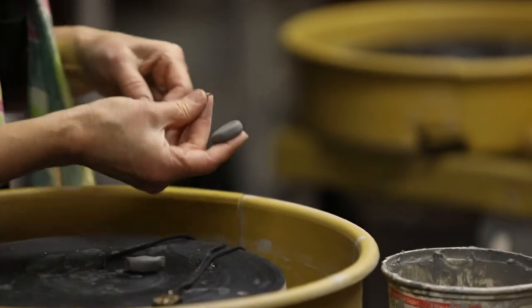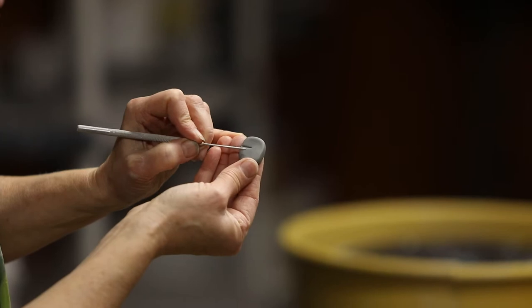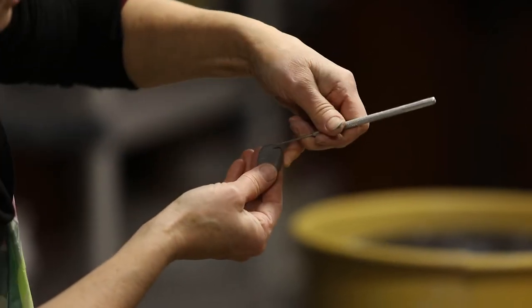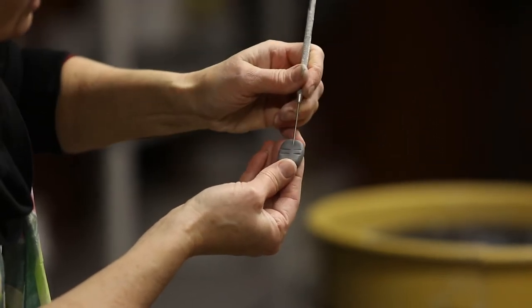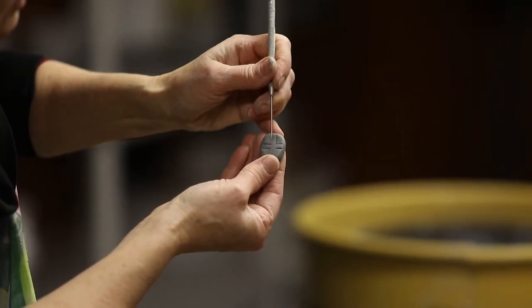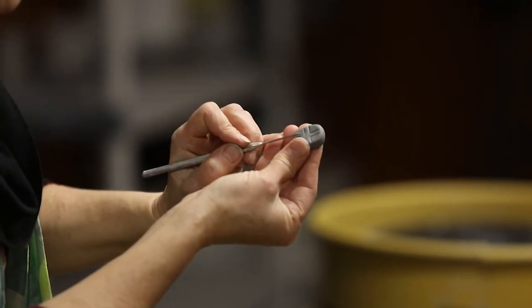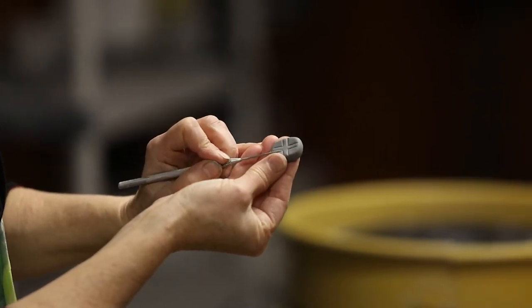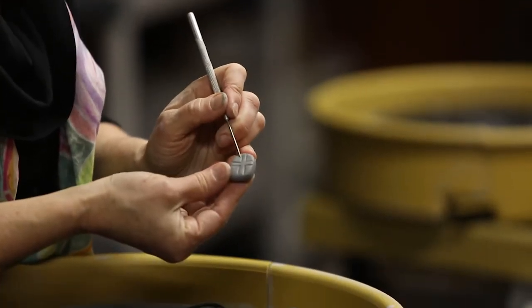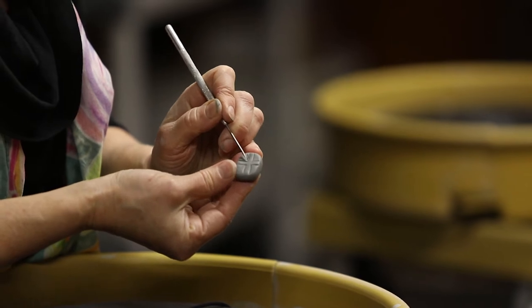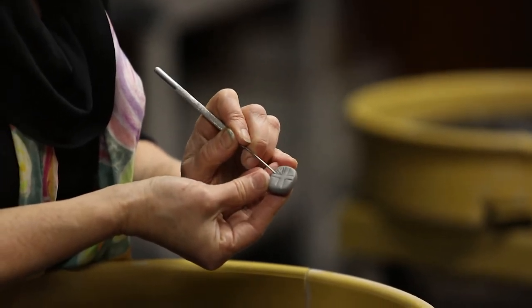And what I tend to do then is I line out with my needle tool the image that I want shown. So I'm just going to do a simple cross. And then to make that really pop, I texture the entire surrounding with the needle tool. Just so simple.